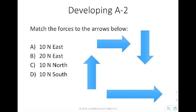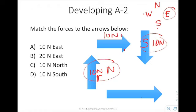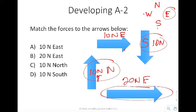Next, match the forces to the arrows. We're going to orient ourselves with north, east, south, and west. This arrow has to be 10 newtons south because it's the only one pointing south. This one has to be 10 newtons to the north because it's the only one pointing up. Now we have two vectors both pointing to the east. The shorter one is 10 newtons to the east, and the longer one is 20 newtons to the east — because the length of that vector is greater.